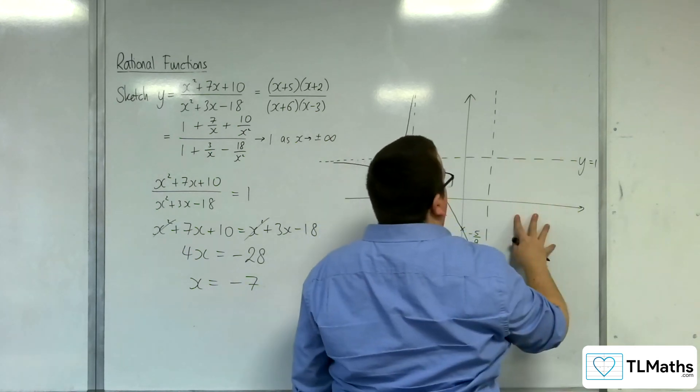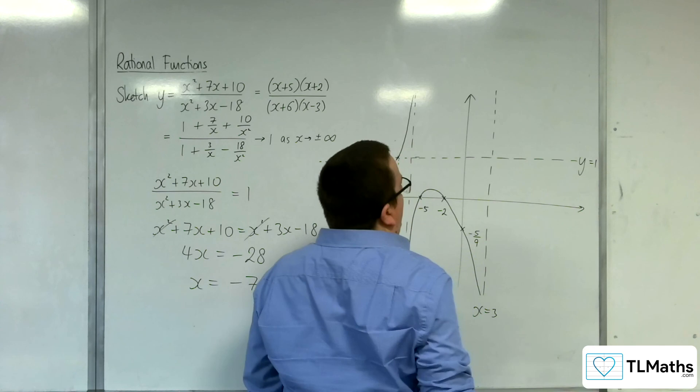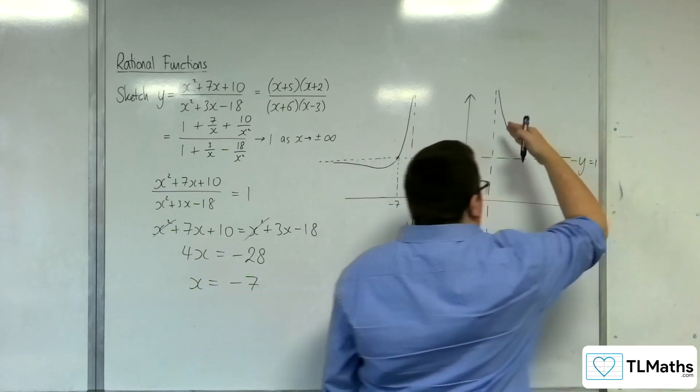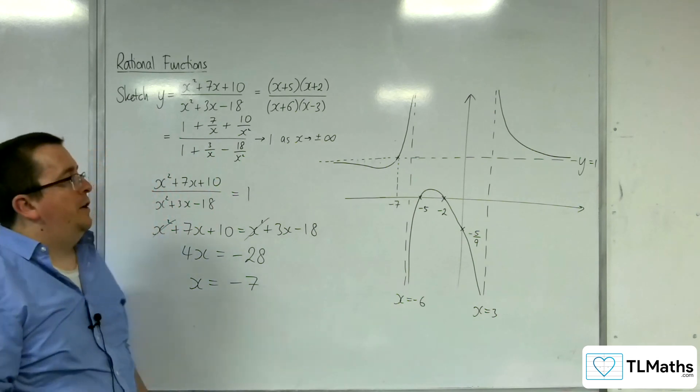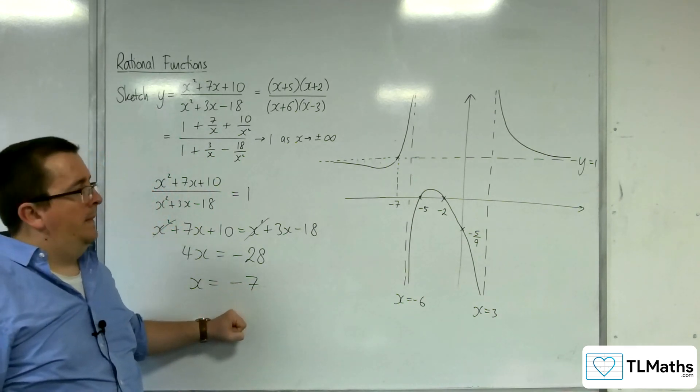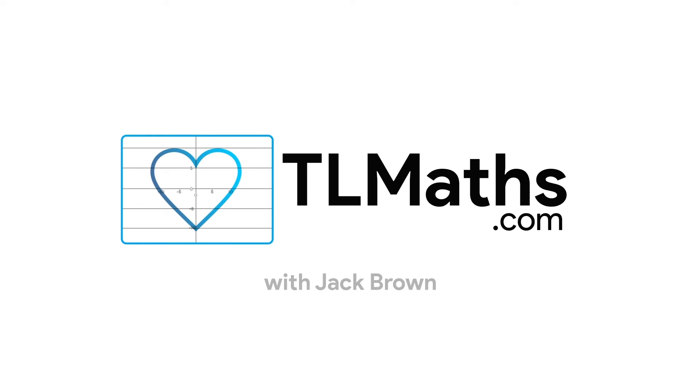And as for here, well, it can't be coming up from this direction. Otherwise, we'd have to cross the x-axis. It must be coming down this way. And we know it won't cross the horizontal asymptote. Because we know the only intersection point is at minus 7. And so this is what the curve must look like.